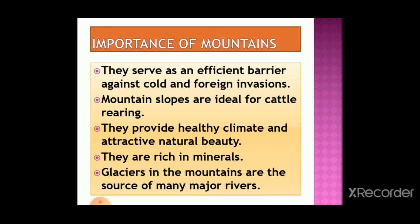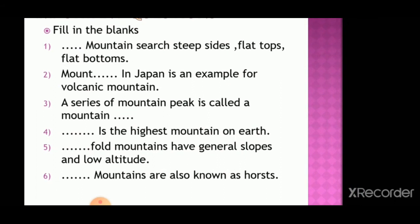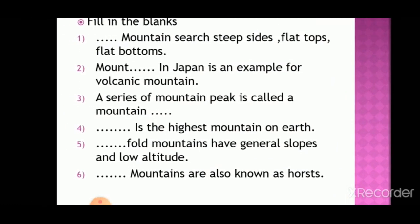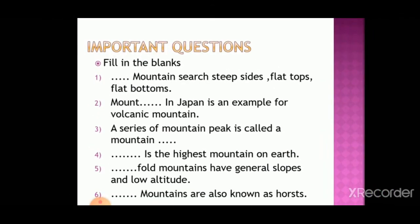Some fill-up questions are given. You can find the answers yourself and learn them. First: which mountains have steep sides, flat tops, and flat bottoms? Second: Mount dash in Japan is an example of a volcanic mountain. Third: a series of mountain peaks is called a dash mountain range. Fourth: dash is the highest mountain on earth. Fifth: old fold mountains have gentle slopes and low altitude. Sixth: dash mountains are also called horsts. You can upload your marks, name, class, and obtained mark in the comment box. Read the textbook well and the remaining chapters will be uploaded soon. Thank you.